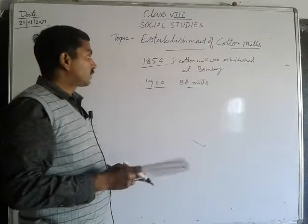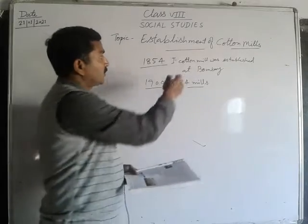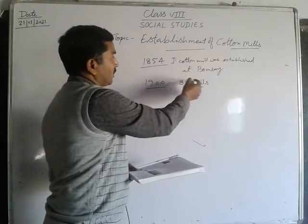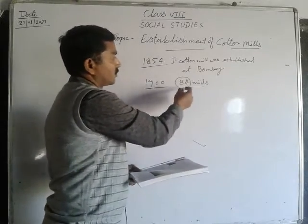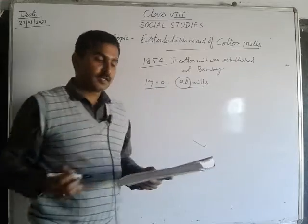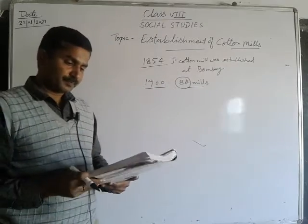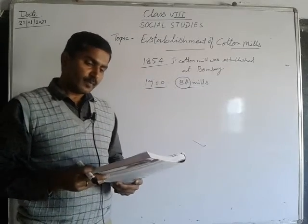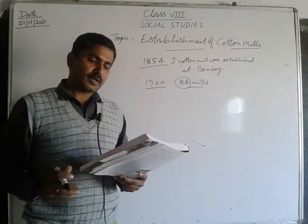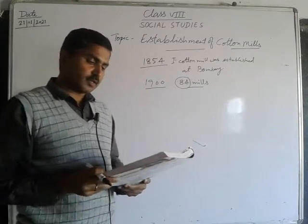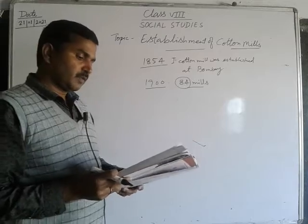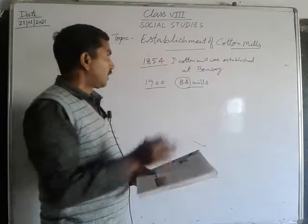Within 46 years, from 1854 to 1900, the number of cotton mills grew to 84. They had their trade relations mainly with China.